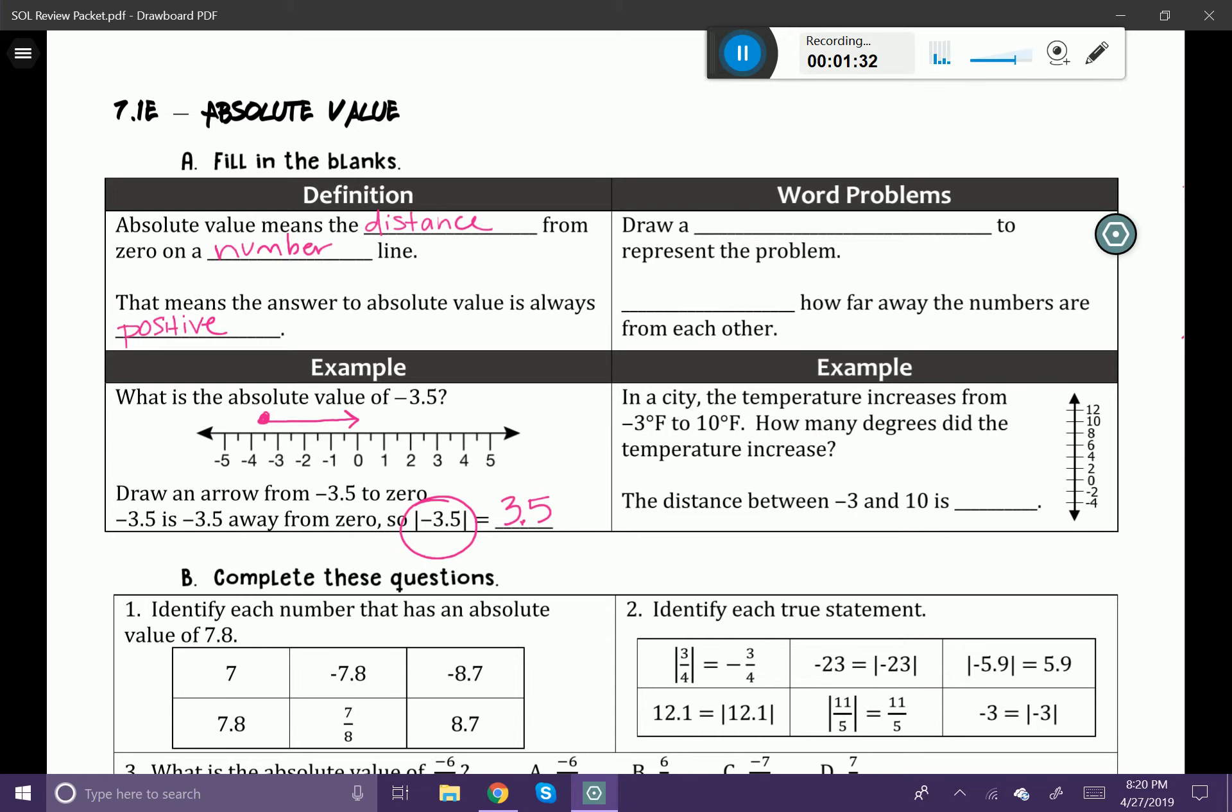So a couple other examples of that might look like this. If you have something like the absolute value of, let's just say 4.2, notice that we have a positive number inside the absolute value. Remember that your answer is always going to be positive. So the absolute value of 4.2 is still going to be 4.2.